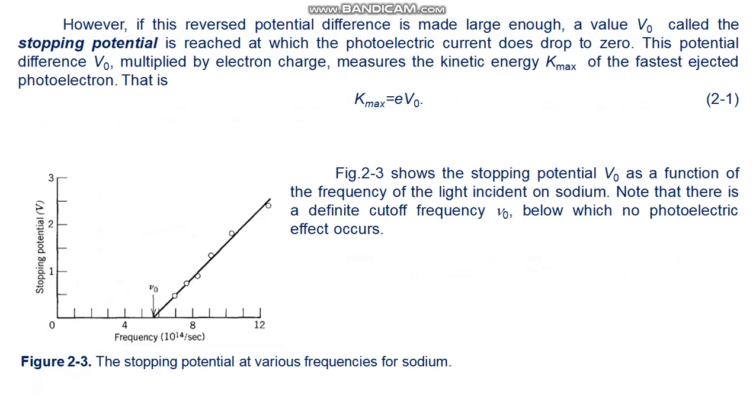The quantity K_max turns out experimentally to be independent of the intensity of the light, as is shown by curve B in Figure 2.2, in which the light intensity has been reduced to one half. Figure 2.3 shows the stopping potential V₀ as a function of frequency of the light incident on sodium. Note that there is a definite cutoff frequency ν₀ below which no photoelectric effect occurs. This data was taken in 1908-1914 by Millikan, whose painstaking work on the photoelectric effect won him the Nobel Prize in 1923.